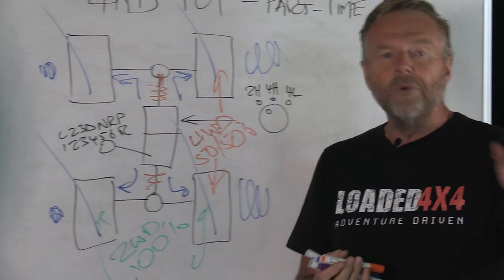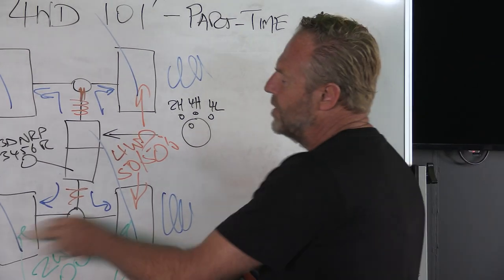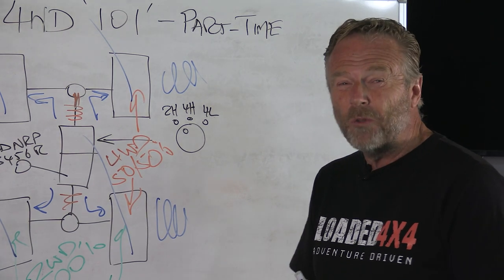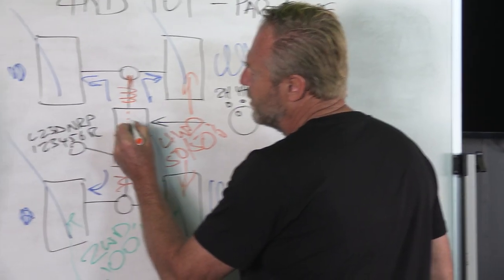When we're in 2WD, all the energy goes out through the back wheels on bitumen, no drama at all. But if we hook this up into four-wheel drive and join the front end to the back end and still drive on bitumen, there will be a problem.